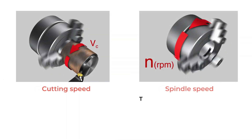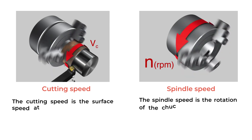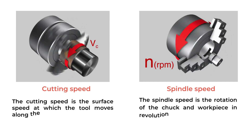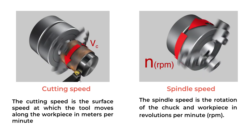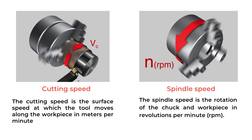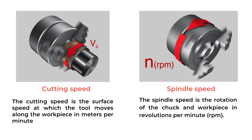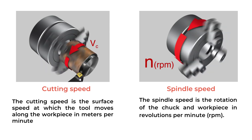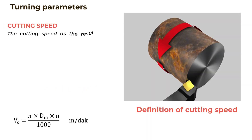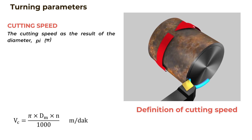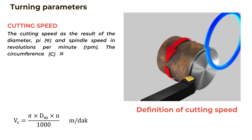Cutting speed and spindle speed in turning. The cutting speed is the surface speed at which the tool moves along the workpiece in meters per minute. The spindle speed is the rotation of the chuck and workpiece in revolutions per minute. Cutting speed is the speed difference between the cutting tool and the surface of the workpiece it is operating on.